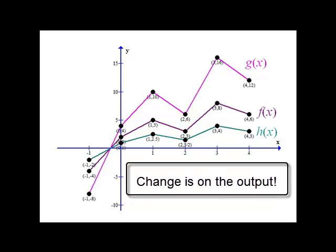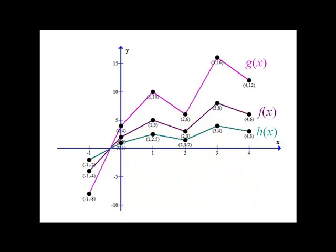And these are, again, changes on the output. They come from multiplying the function by some constant value. If the value is larger than 1, it stretches it. If it's in between 0 and 1, it compresses it. If it happens to be a negative value, then we have a reflection.